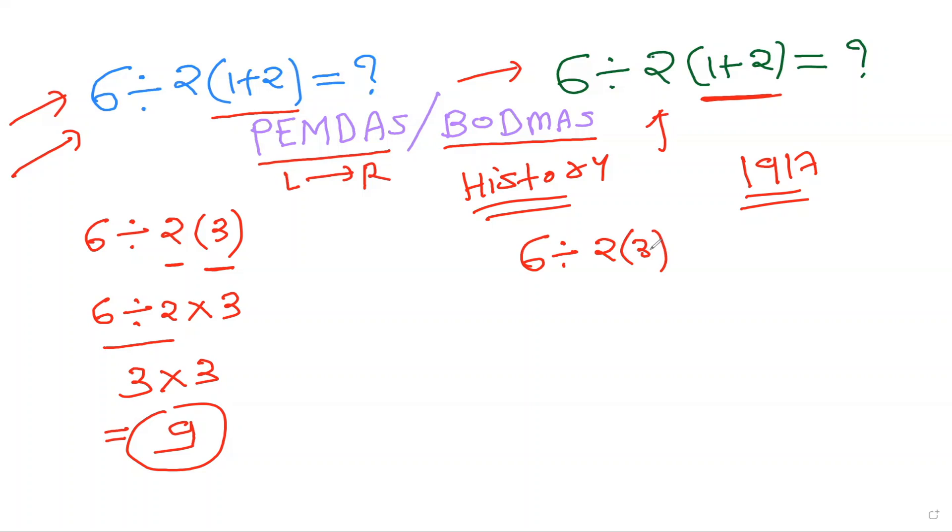Before 1917 they had a special rule. The special rule was when there is a division, they're saying we're going to divide the left-hand side component with everything on the right-hand side component. So like left-hand side divided by right-hand side.